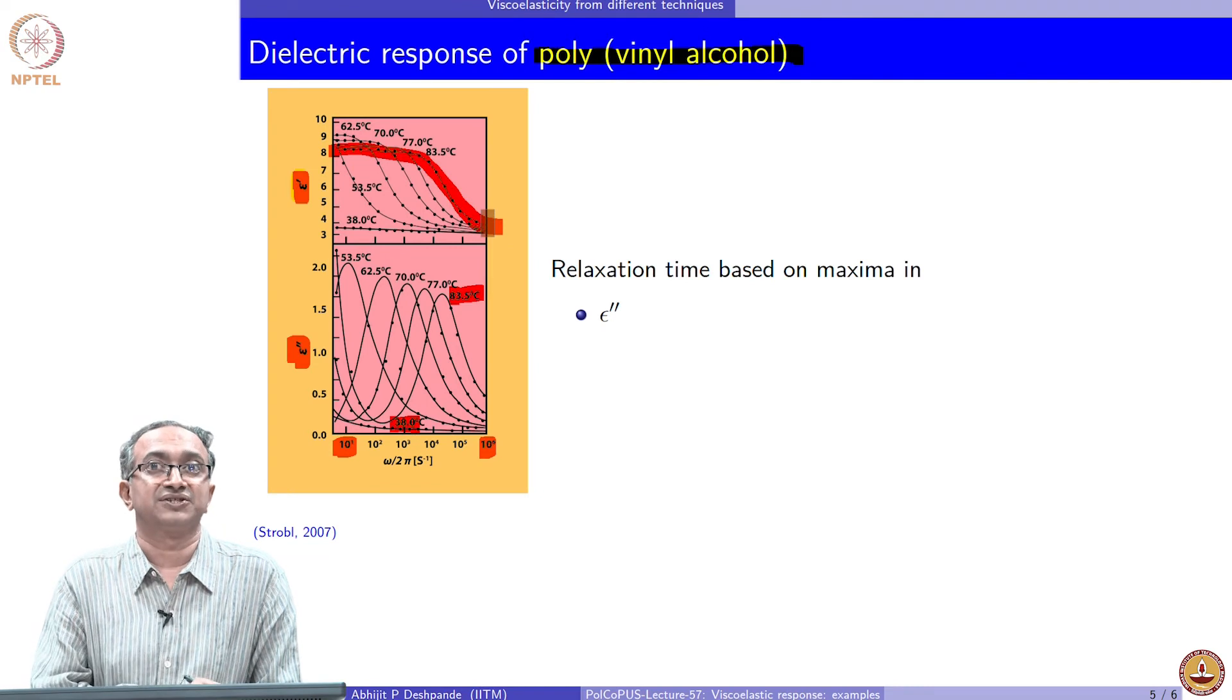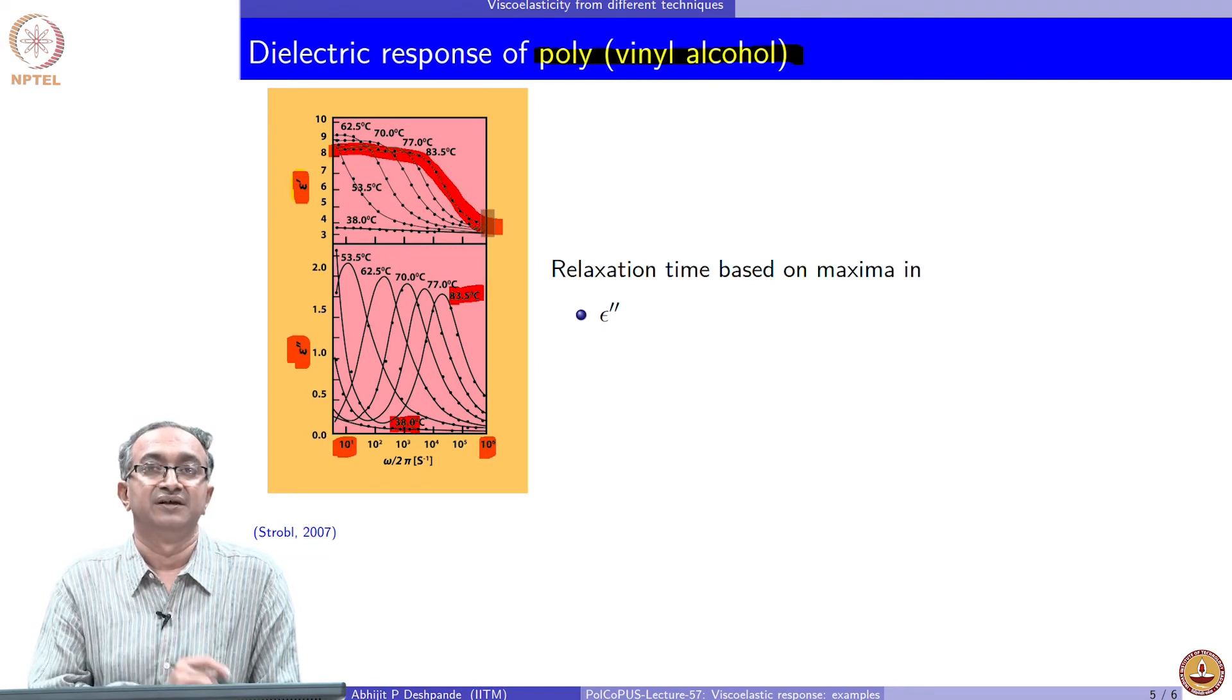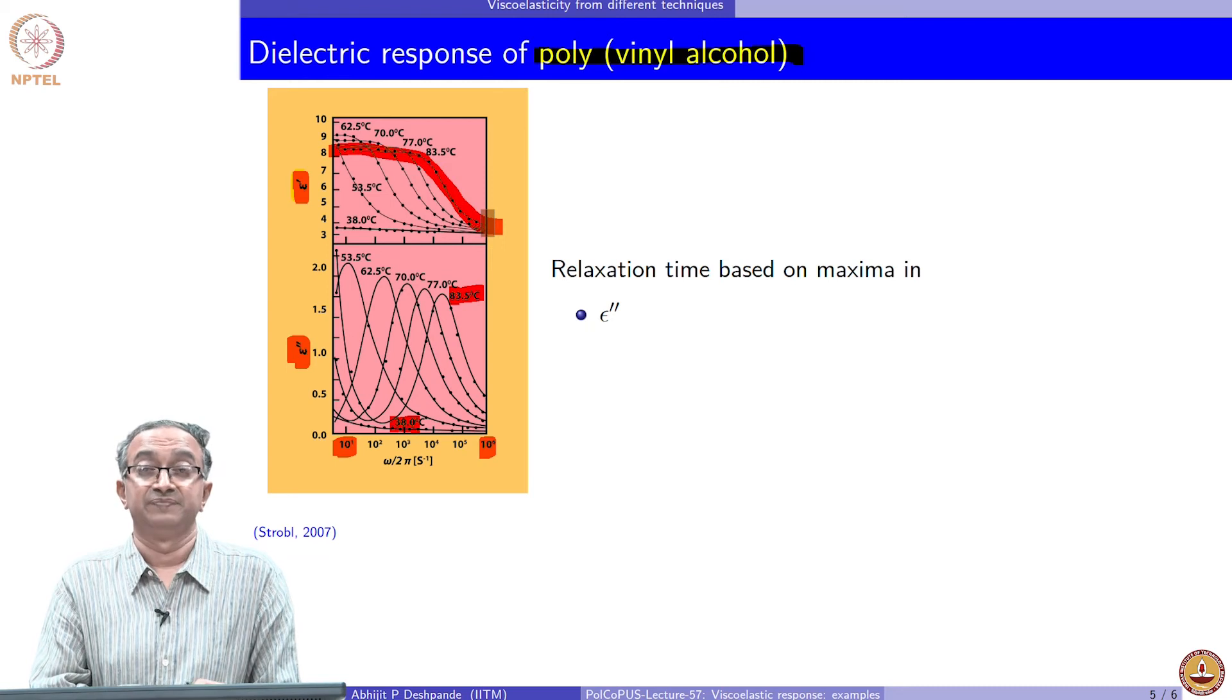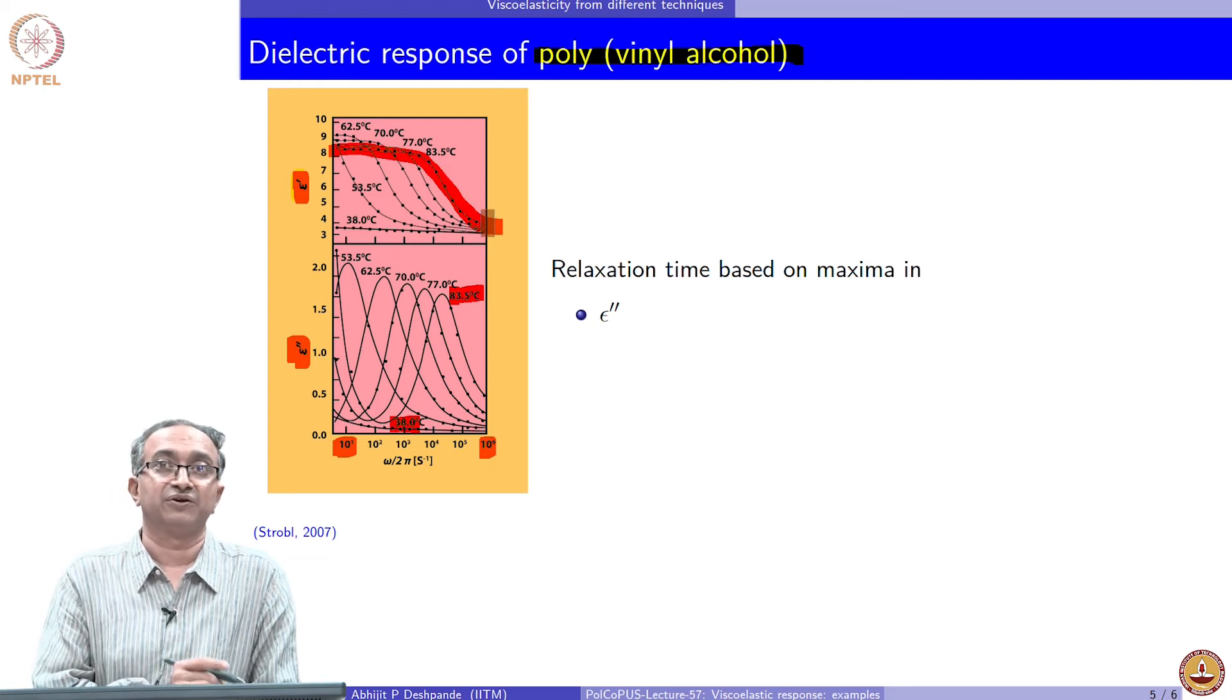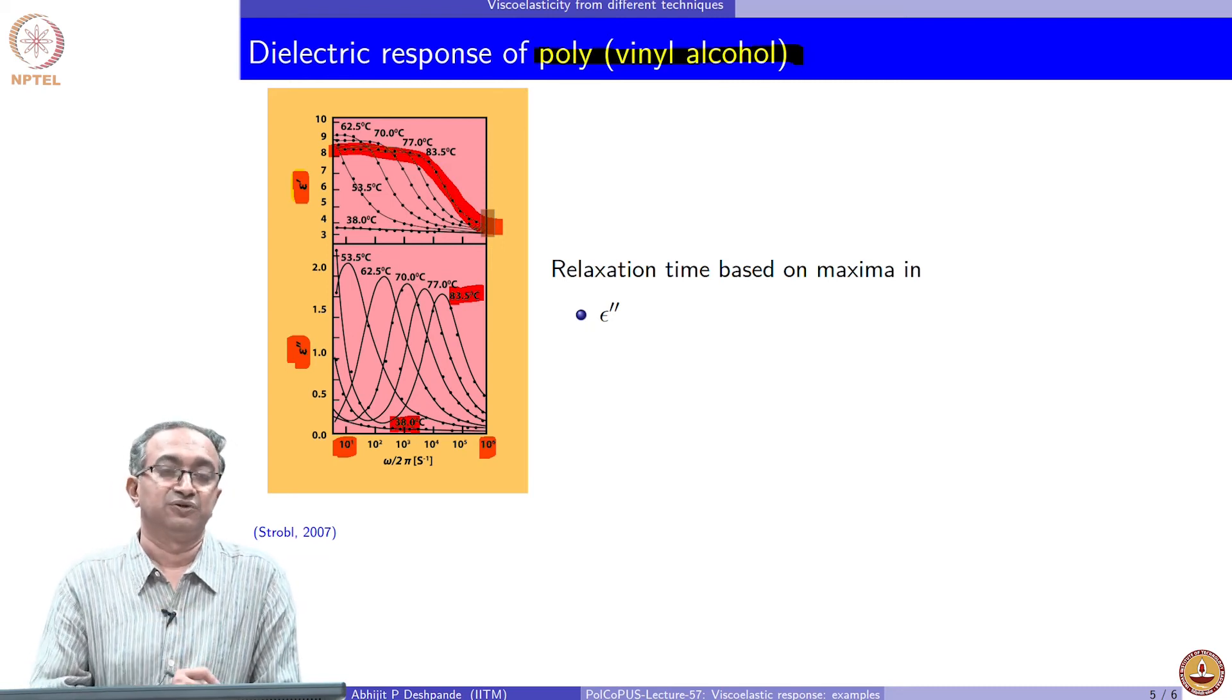And I hope that you can recognize what is the dipole in case of polyvinyl alcohol. If you do not, please go look at the structure of polyvinyl alcohol and identify what could be the dipole that can orient. Is it part of a side group? Is it part of the backbone? Try to answer those questions.